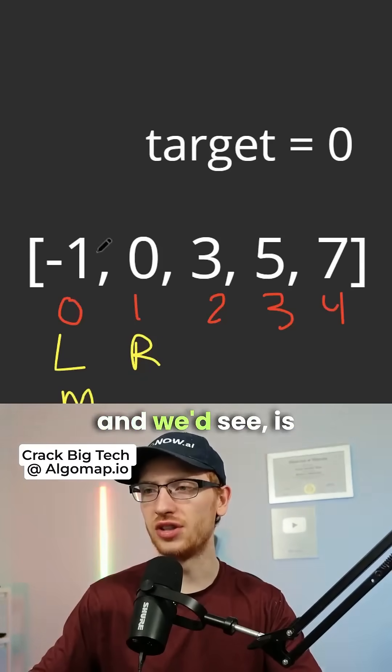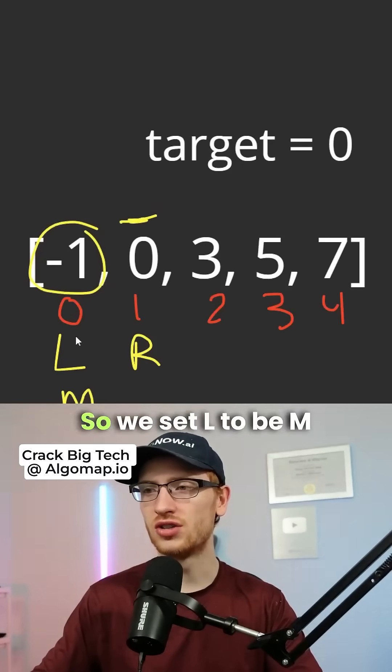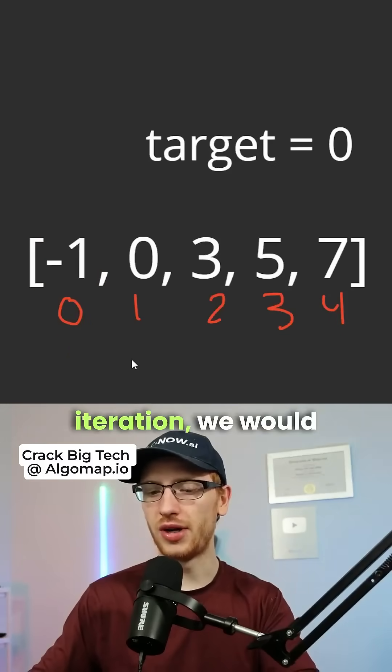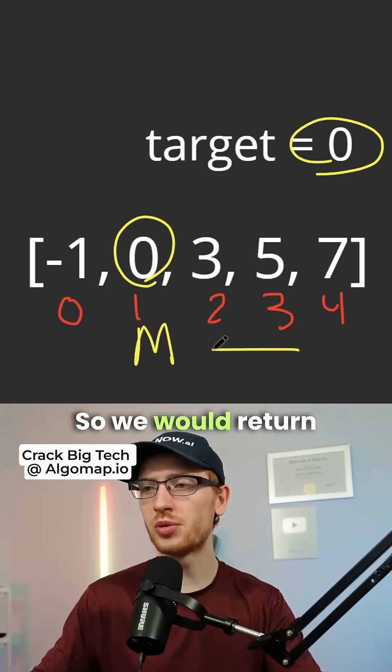We would get our m now as this value and we'd see is this the target? No it's not, this value is too small. So we set l to be m plus 1 and on our last iteration, we would see that the array at m is equal to our target. So we would return the index.